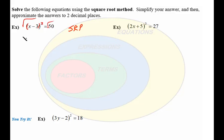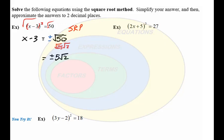The left side just becomes x minus 3, and the right side becomes plus or minus the square root of 50. The square root of 50 we can simplify — that's the square root of 25 times the square root of 2, which equals plus or minus 5 square root of 2. So we simplify all our square roots by taking out perfect square factors. We get x minus 3 equals plus or minus 5 square root of 2.